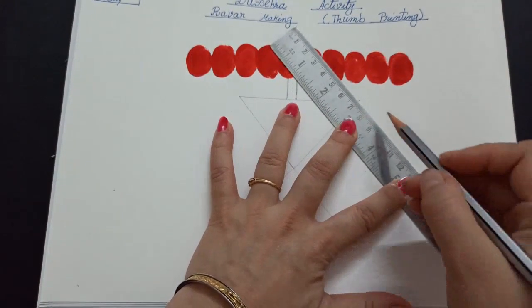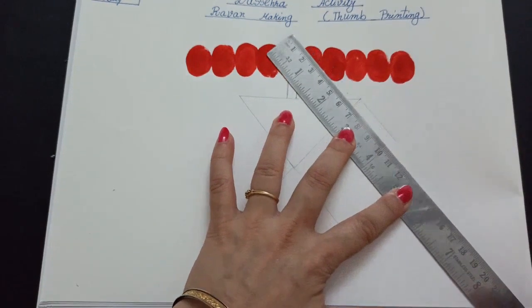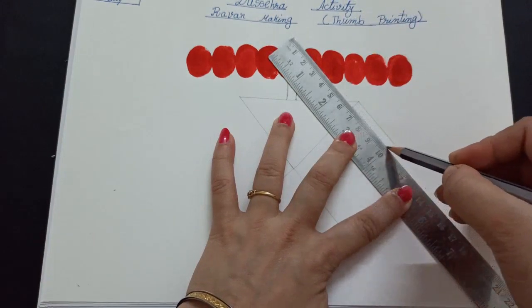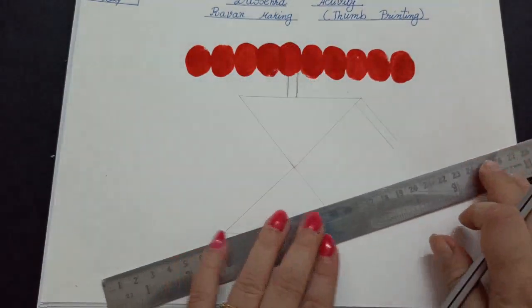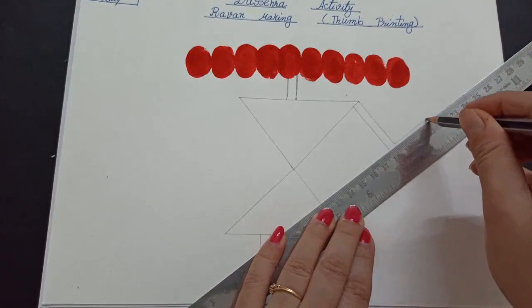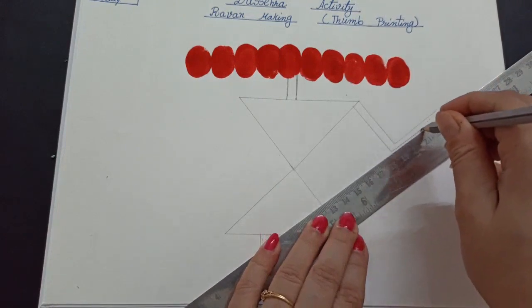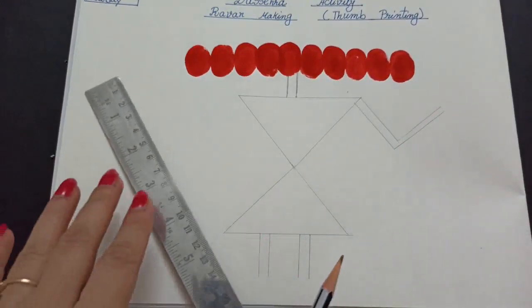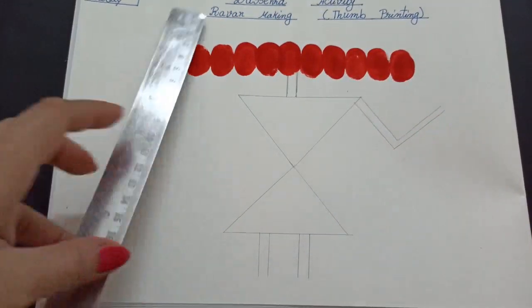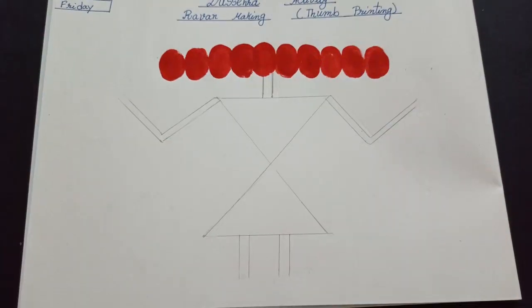Now, we will make Ravan's hand. A slanting line. Again, a slanting line. Then, this way. A slanting line. And a slanting line. See, it looks like letter V. Now, again, another hand.